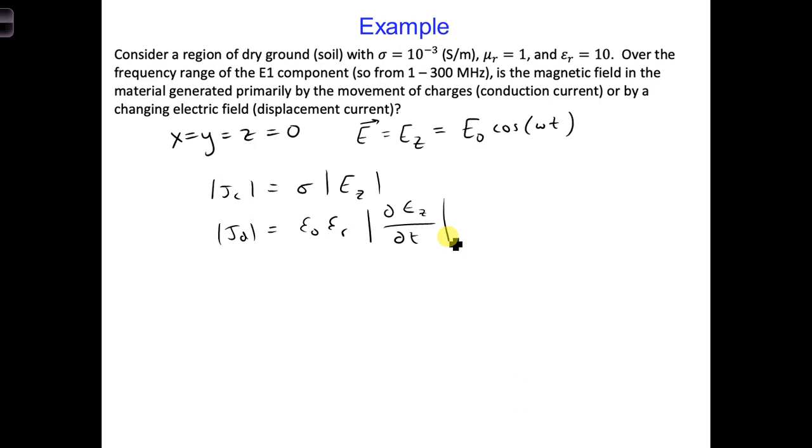Now, it's hard to directly compare these in the time domain because of the time derivative. So instead, let's compare these two currents in the sinusoidal steady state. When we convert to the sinusoidal steady state, we're going to take the Fourier transform of both expressions, and we're going to get j omega for our time derivative. So here we're going to get epsilon naught epsilon r magnitude of j omega and e_z.